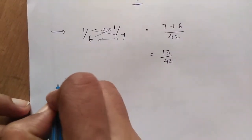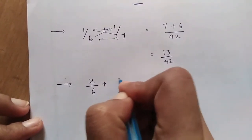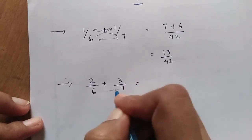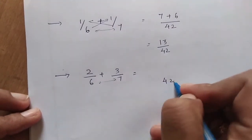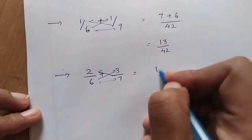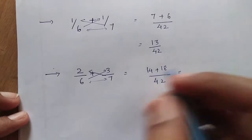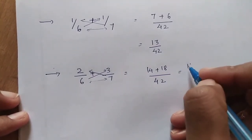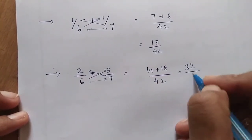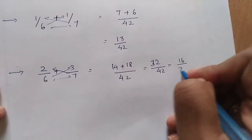Another example: 2/6 plus 3/7. Multiply denominators: 42. Then cross multiply: 7 times 2 is 14 plus 6 times 3 is 18, which equals 32/42. We can simplify it to 16/21.